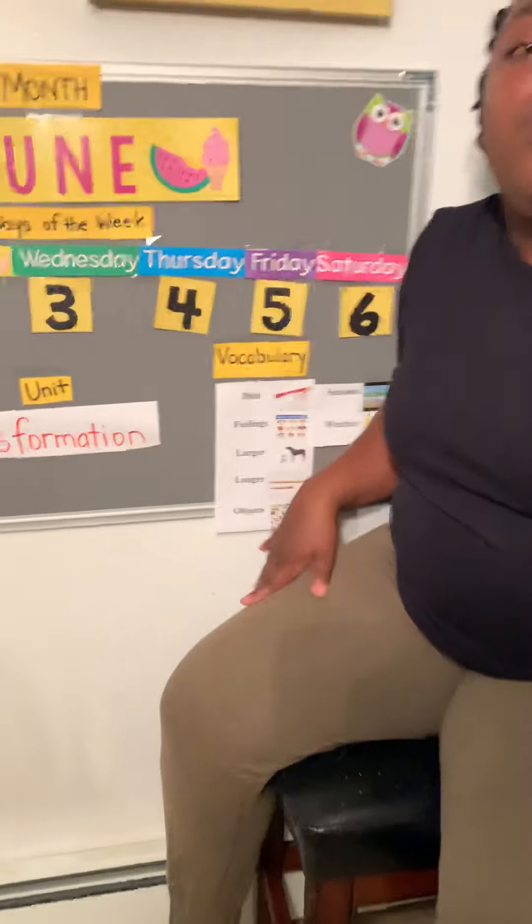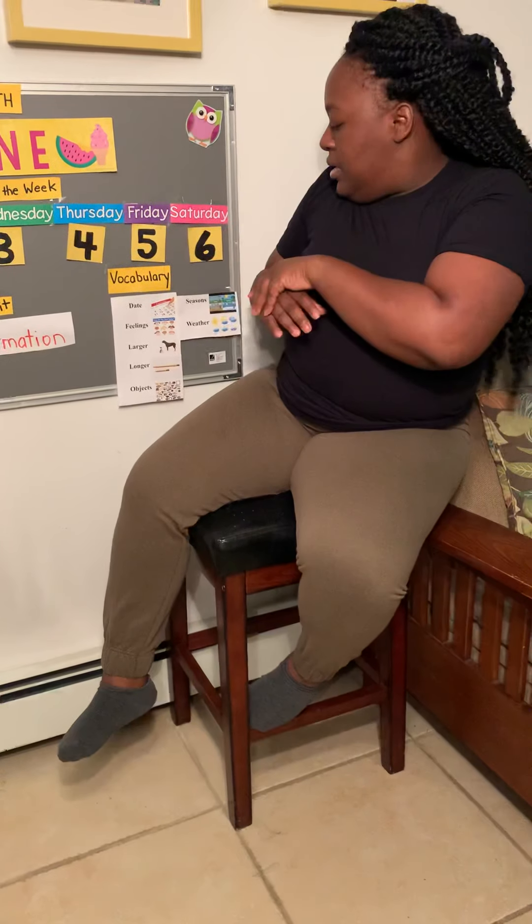We talked about a bunch of different types of transformation this week. We talked about how feelings can change, how objects can change like the string that wiggled and we made shapes with, and how the weather can change — some days are rainy, some cloudy, some hot and sunny, some very cold. And today we're going to look at seasons.